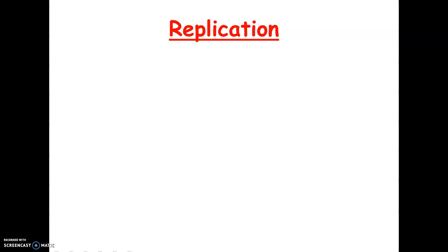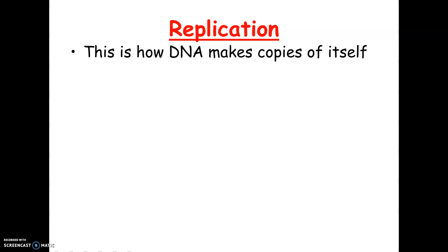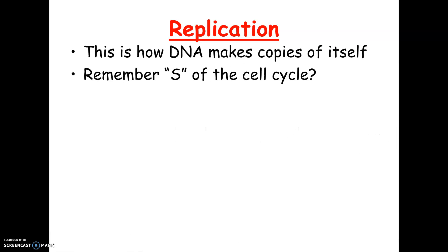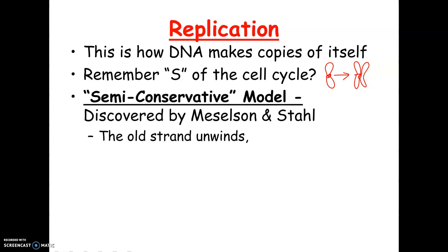Now that we've talked about the structure of DNA, we're going to talk about how DNA copies itself, which is called replication. When does this happen? Why does DNA need to do this? Any time a cell is going to reproduce, each new cell needs a copy of the DNA information. So this is where, during S of the cell cycle, a chromosome would go from looking like a stick to looking like an X. We're going to talk on a molecular level about how this happens.